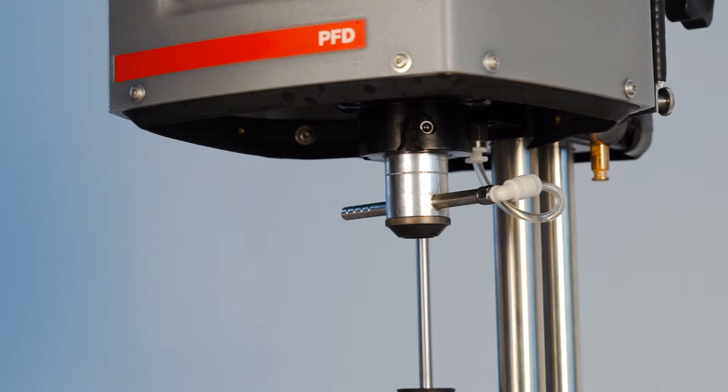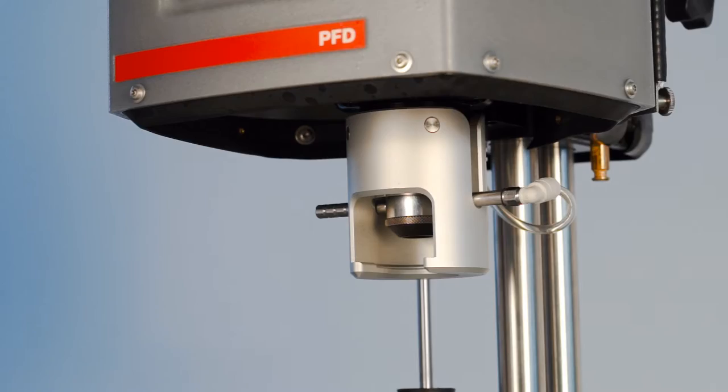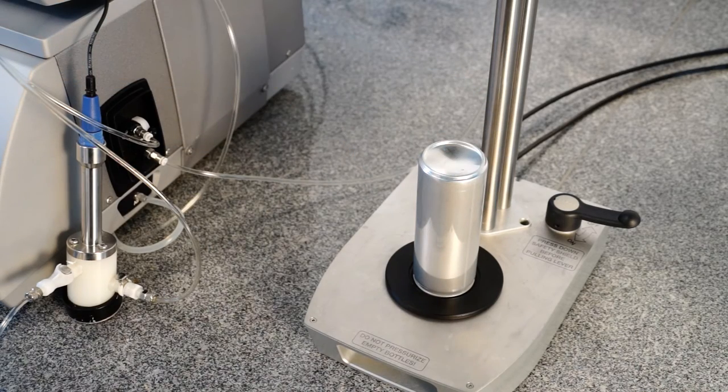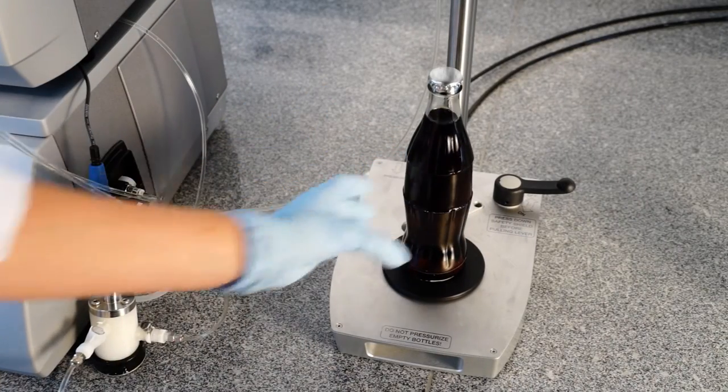For PET bottles, please install the adapter on the piercing and filling device. Cans need to be placed upside down. Glass bottles can be inserted as they are.